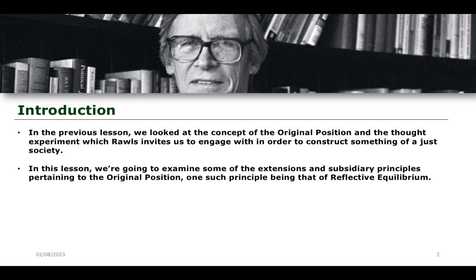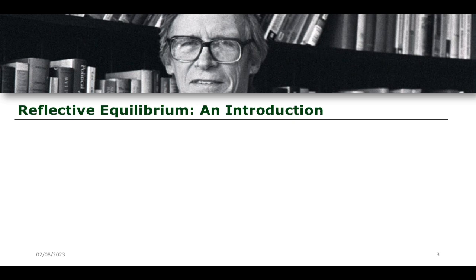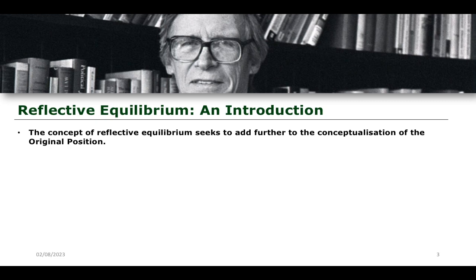This lesson examines one of the subsidiary principles of the original position — this is the idea of reflective equilibrium. Reflective equilibrium is essentially the idea of arriving at a moral position on the basis of a number of iterative back-and-forths. You essentially see that a situation might not be particularly moral, or there might not be agreement between various contrasting opinions, and then to achieve reflective equilibrium is to essentially adjust your moral position such that everybody would agree to the position that is ultimately established. That is what reflective equilibrium tells us is the process.